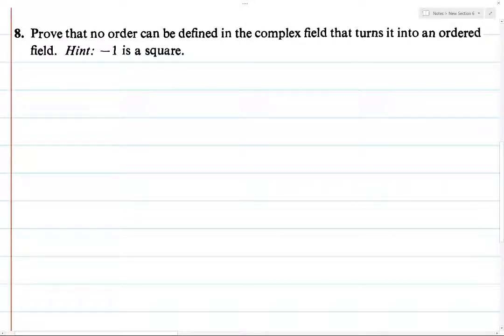Alright, here's sort of a neat little problem. Prove that you can't define an order on the complex field which makes it into an ordered field.